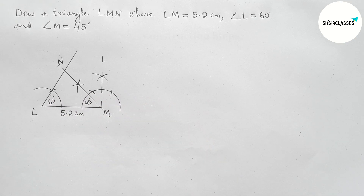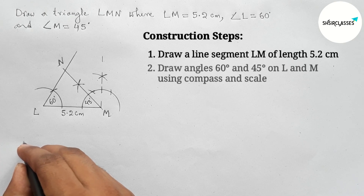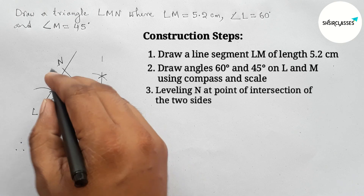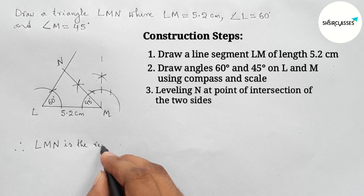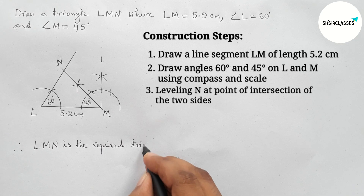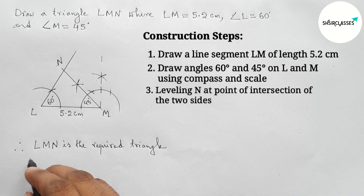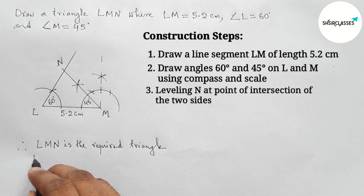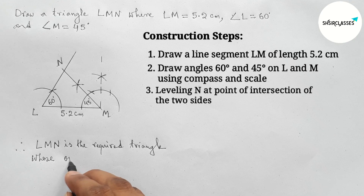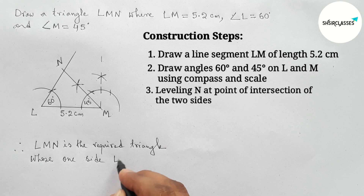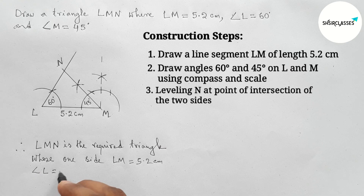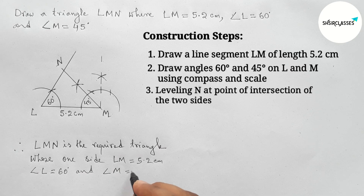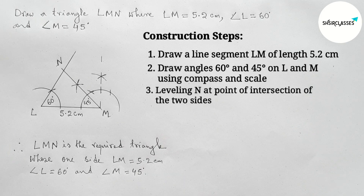All the construction steps are shown here. Therefore, LMN is the required triangle whose one side LM equals 5.2 centimeters, angle L equals 60 degrees, and angle M equals 45 degrees. That's all. Thanks for watching. If this video is helpful to you, please share it with your friends.